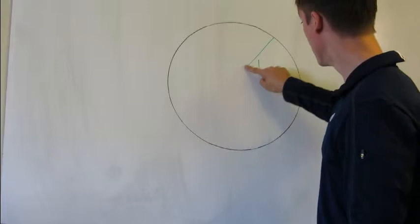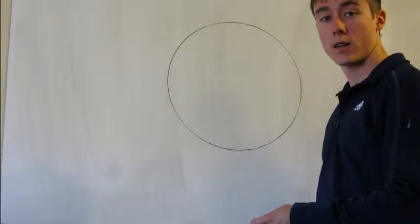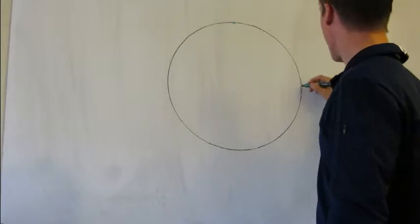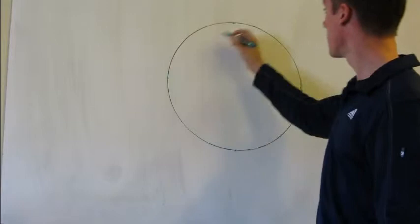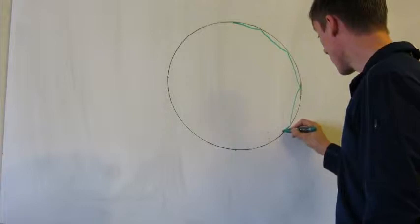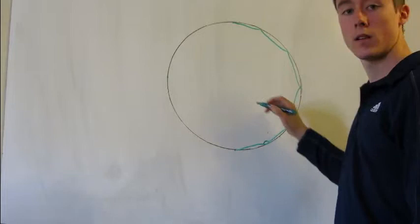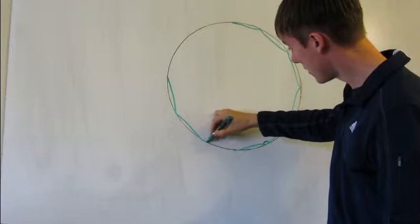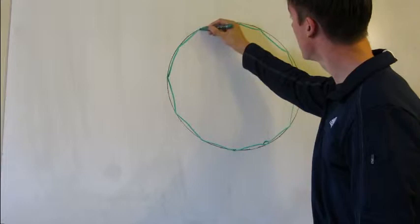It's going to be a regular dodecagon. Let me go ahead and draw it. A regular dodecagon has twelve sides, all of them are the same, and all of the angles are also going to be the same.